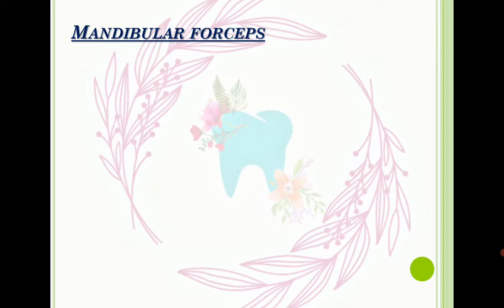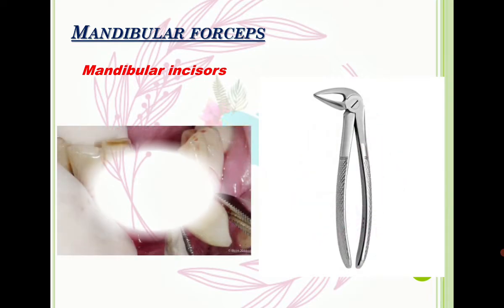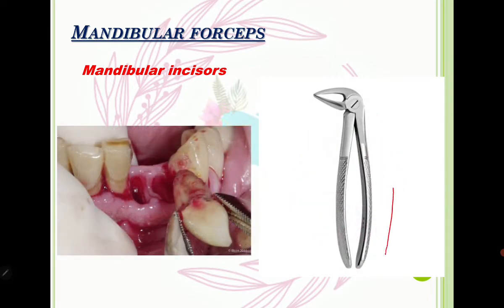Now let's look at mandibular forceps. For mandibular incisors, the forceps have a straight handle but pay attention to the angle — when there is an angle, it belongs to mandibular forceps. In this picture you can see how the dentist applies these forceps and extracts the incisors.